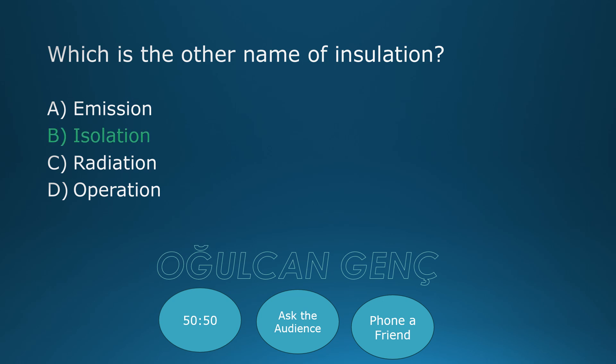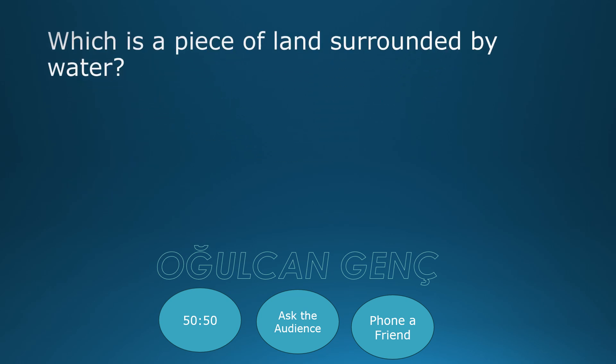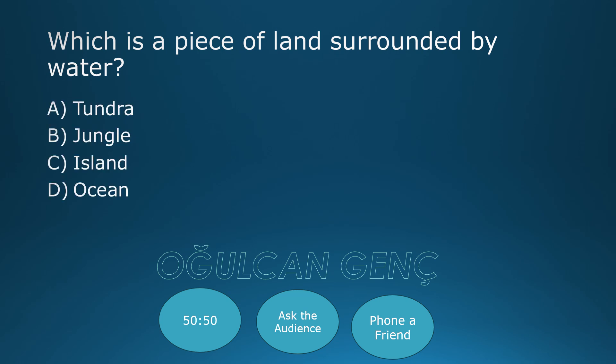Which is a piece of land surrounded by water? Options: Tundra, Jungle, Island, Sea. Final answer: Island. Correct answer is Island.